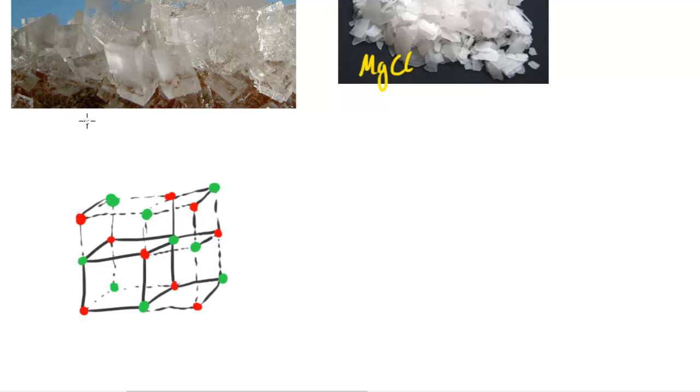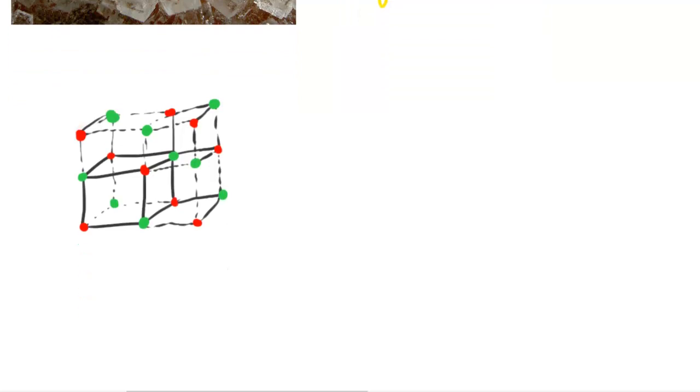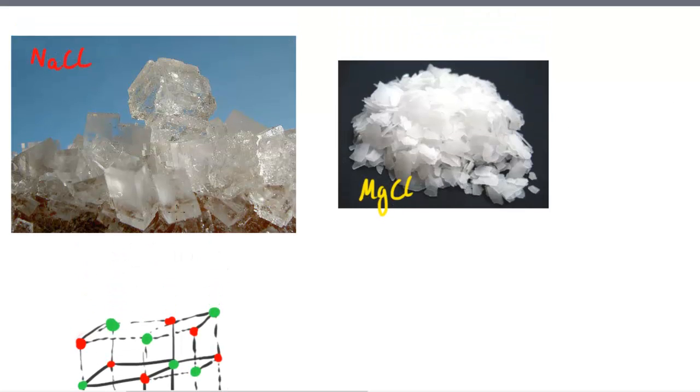This structure repeats outwards in a giant ionic structure. This structure basically repeats in all different directions, and so this is basically what we call a giant ionic lattice. So I hope that was helpful. Up here is magnesium chloride and sodium chloride, basically the crystals.